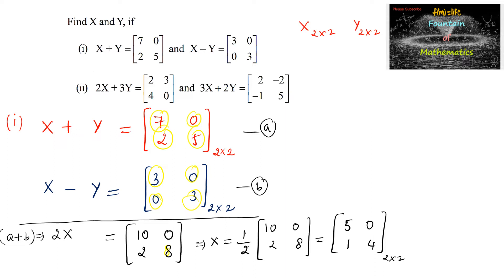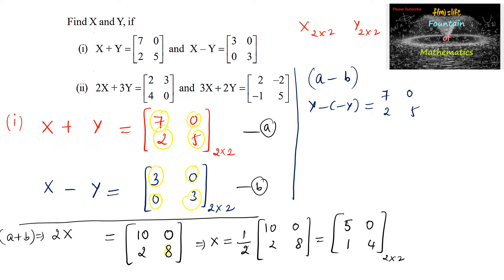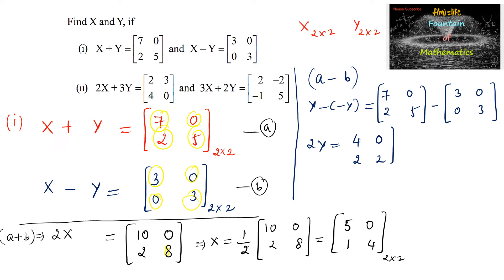Now subtracting the two matrices — A minus B — X and X get cancelled, and Y minus of minus Y gives 2Y. So 2Y is equal to [7, 0; 2, 5] minus [3, 0; 0, 3]. Subtracting corresponding elements: 7 minus 3 is 4, 0 minus 0 is 0, 2 minus 0 is 2, and 5 minus 3 is 2. So 2Y equals [4, 0; 2, 2].